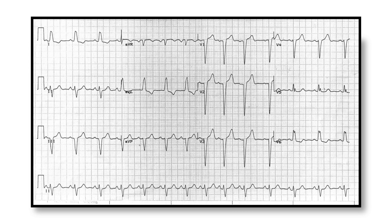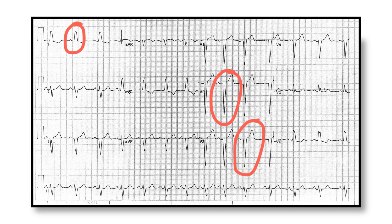We can see that very clearly if we look at the 12-lead ECG. In leads where the QRS complexes are negative, we can see that the ST segments tend to be elevated. Conversely, in leads where the QRS complex is positive, the ST segment tends to be depressed in those leads. This is appropriate discordance.